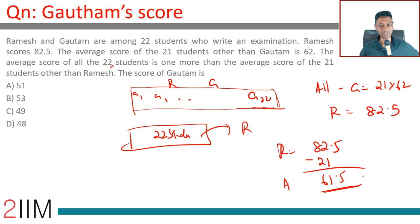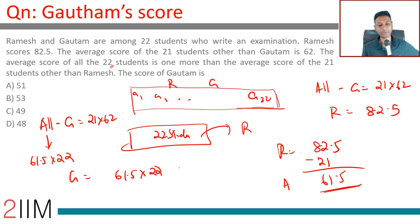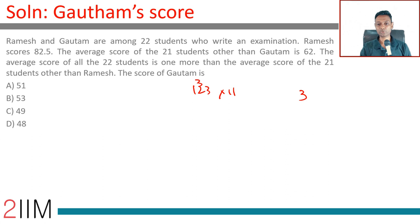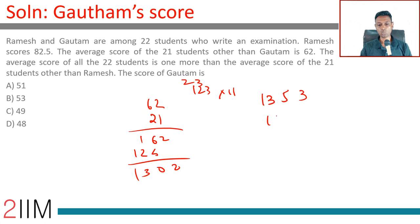The overall average is 61.5. Everyone minus Gautam's score is 21 into 62; everyone is 61.5 into 22. So Gautam's score = 61.5 into 22 minus 21 into 62. That gives 123 into 11 minus 21 into 62, working out to 1353 minus 1302 = 51. Gautam's score should be 51.